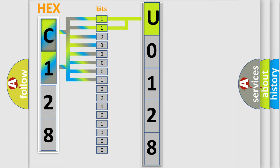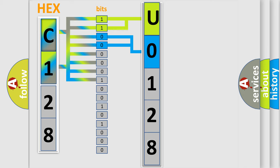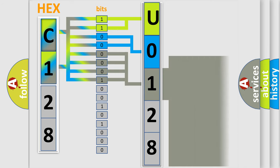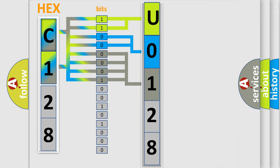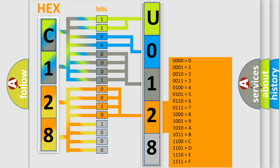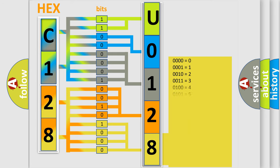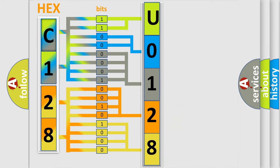The next two bits determine the second character. The last bits of the first byte define the third character of the code. The second byte is composed of a combination of eight bits. The first four bits determine the fourth character of the code, and the combination of the last four bits defines the fifth character. A single byte conceals 256 possible combinations.